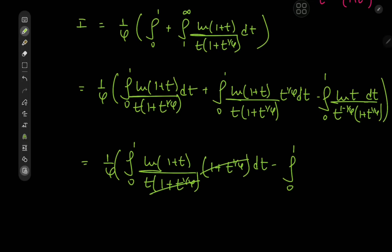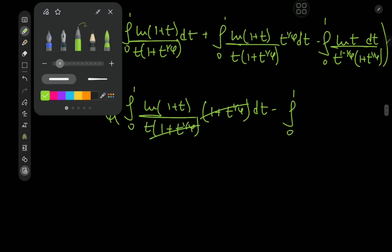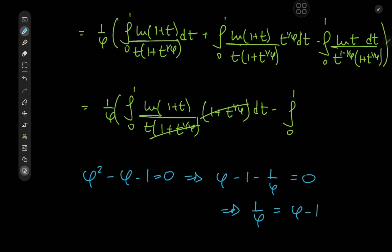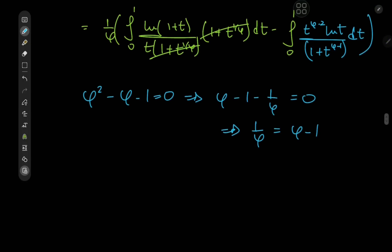Now we use the golden ratio property: φ satisfies φ² - φ - 1 = 0, so multiplying by 1/φ gives φ - 1 - 1/φ = 0, meaning 1/φ = φ - 1. Using this, the t^(1/φ) factor upstairs becomes t^(φ-1), which combines with the t downstairs to give t^(φ-2). A u-substitution is now clear for this integral, but first we need to evaluate the remaining piece, which we'll call I₁.